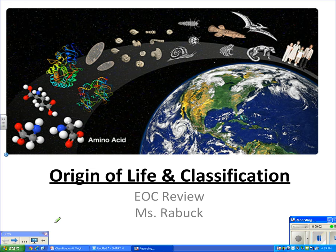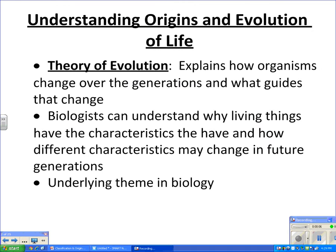Hey, and welcome to the Origin of Life and Classification Review. My name is Ms. Raybuck, and I'll be leading you through this review today. In a previous session, we talked about the theory of evolution, which explains how organisms change over the generations and what guides that change. Biologists can understand why living things have the characteristics they have and how those characteristics will change in future generations. This theory of evolution has huge explanatory power, which is why it's an underlying theme of much of not only our biology class but the EOC. Today, we're going to discuss the leading theories of how life on Earth got started, and we're going to look at how we organize all of that life on Earth today.